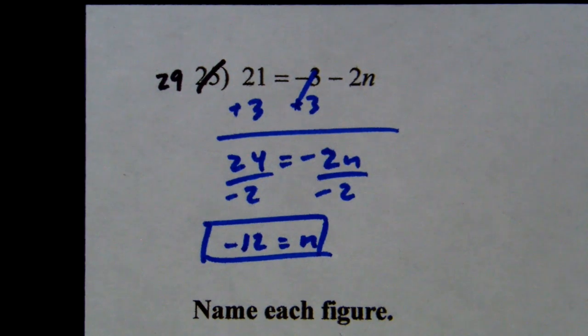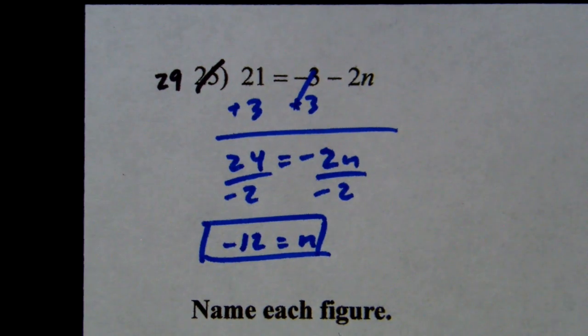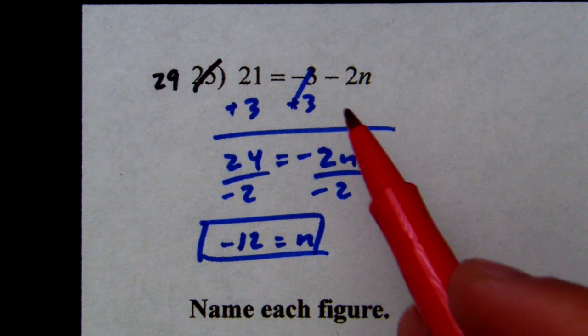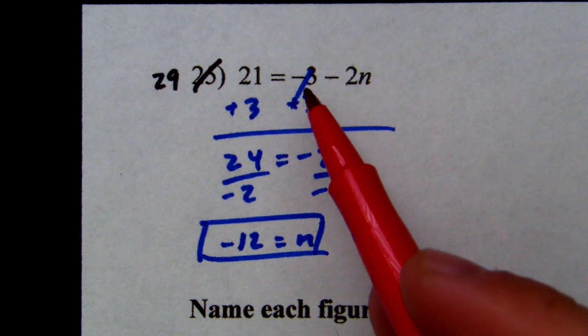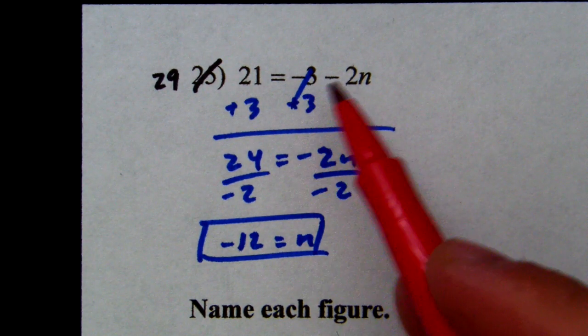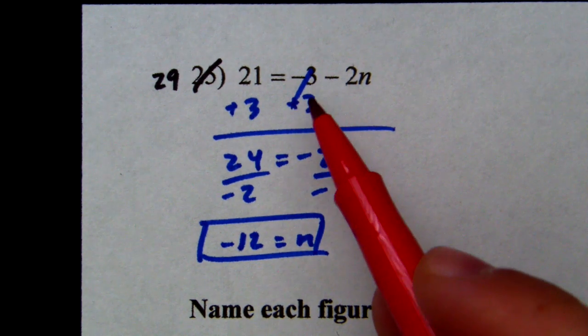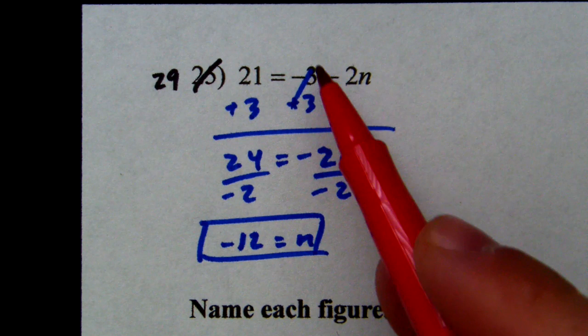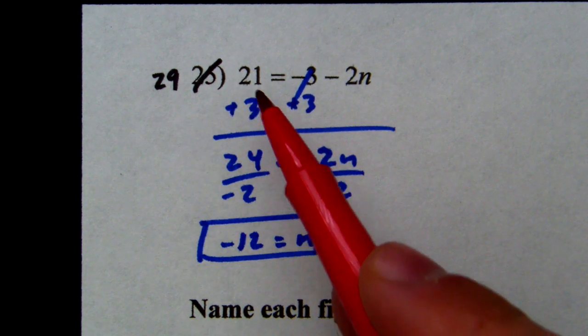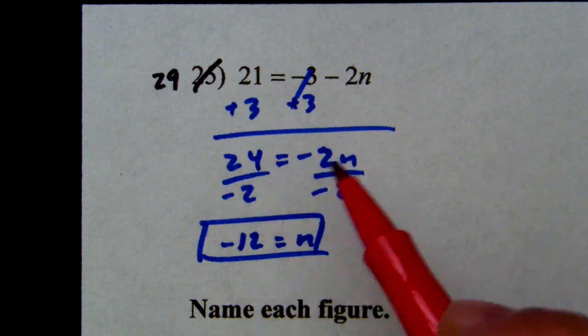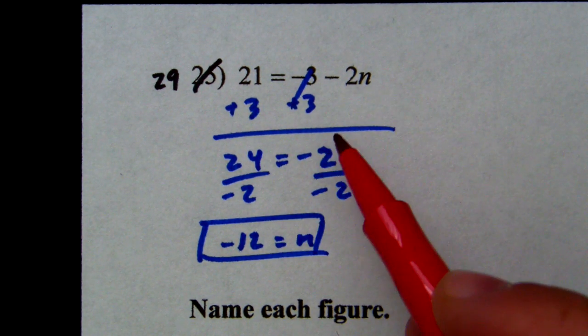Problem 29: we have 21 equals negative 3 minus 2n. We need to move the term that doesn't have a variable. For negative 3, we add 3 — it cancels. 21 plus 3 is 24, and we drop down.